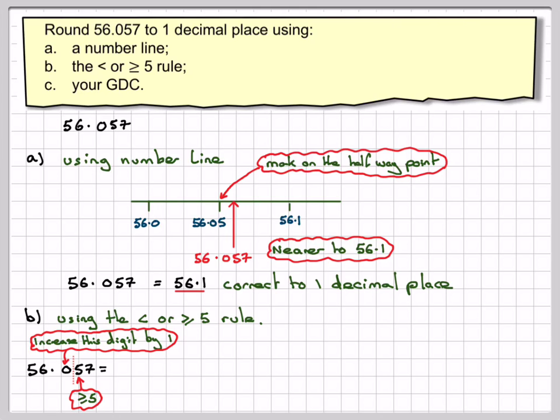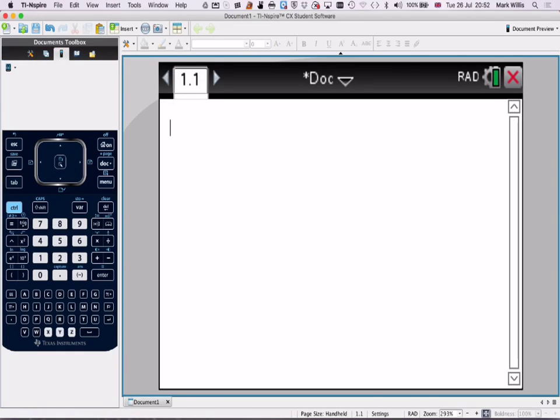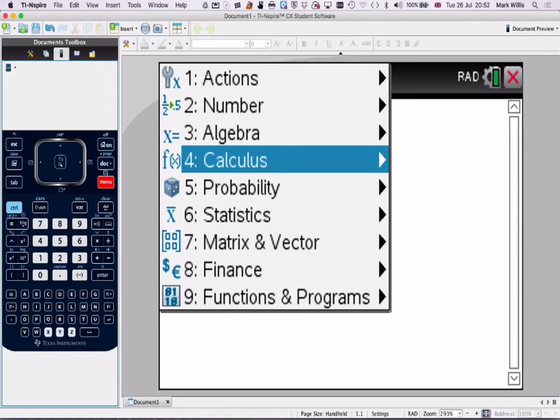So the answer will be the same: 56.1 to one decimal place. If we use the GDC, we turn on our GDC. This is the first menu you get. Go to number, then you need to go to menu, which is there, and go to number 2.